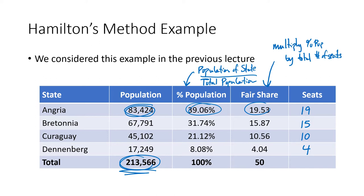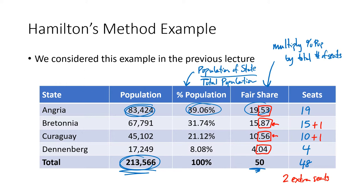Because I rounded down, the total of these numbers will be less than 50. So I grab my calculator and do 19 + 15 + 10 + 4, which works out to 48. But I'm supposed to assign 50 seats, so I have two extra seats. Hamilton's method says look at the decimal parts you threw away when you rounded. The highest decimal part is 0.87, so I assign the first extra seat there. The next highest is 0.56, so I assign the second extra seat there. Now I'm out of extra seats. So A gets 19 seats, B gets 16 seats, C gets 11 seats, and D gets 4 seats — and those add up to 50.